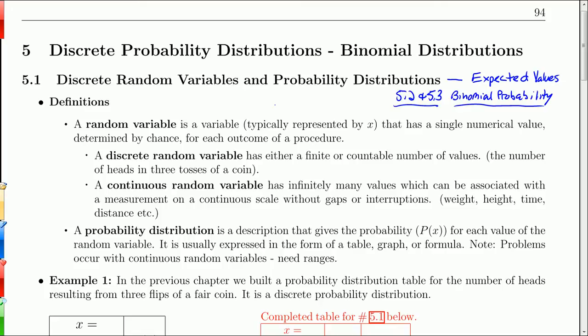In this chapter, we're going to discuss discrete probability distributions in general, and specifically, we'll be discussing the binomial distribution.